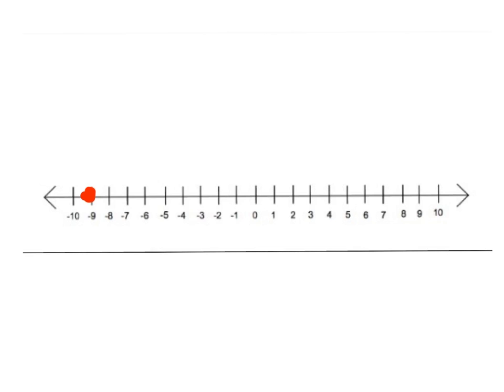And you go 3 spaces to the right. 1, 2, 3, and you end up at negative 6. So you put a little mark there.